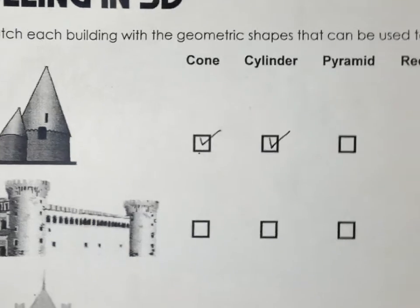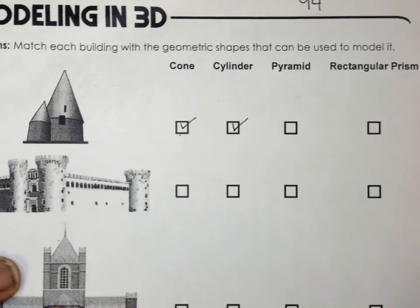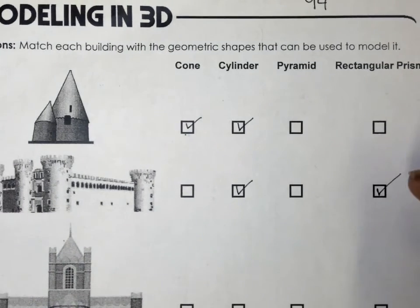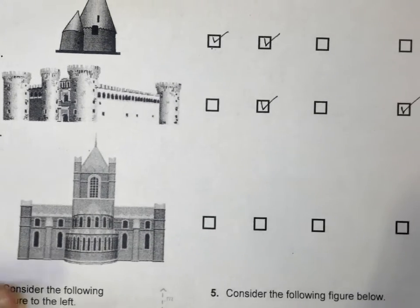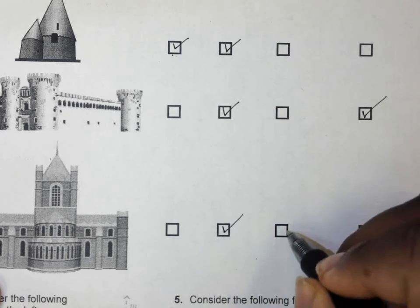Cylinder, rectangle prism. Thank you. Let me zoom out, son. Camora, number three.